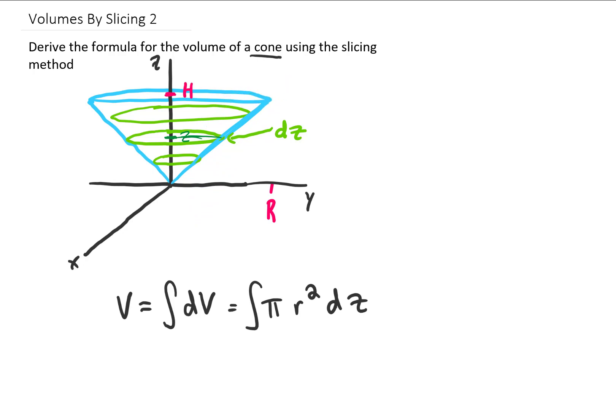How does that radius change? Well, it changes according to the equation of this line right here. This line is in the yz plane. It rises H units and runs R units. So the equation of that line on the border of this cone is z equals H over R, where H and R are both constants.